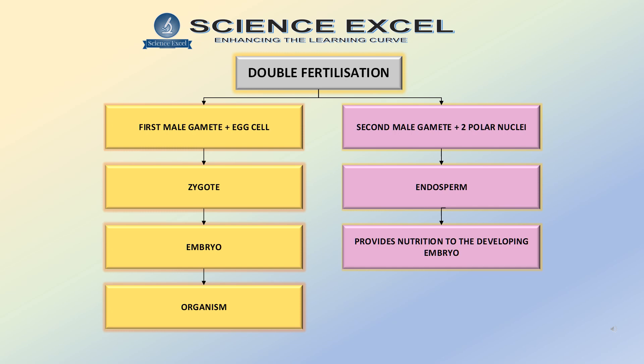The first male gamete unites with the egg cell to form a diploid zygote. This zygote develops into an embryo which further develops into an organism. The second male gamete unites with the two polar nuclei to form the endosperm. This endosperm provides nutrition to the growing embryo.